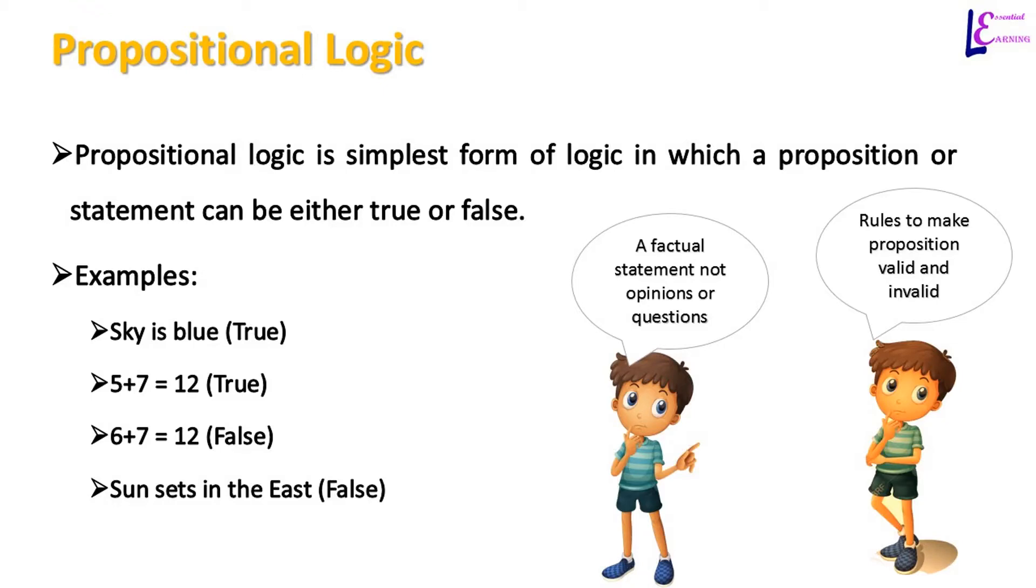Examples of propositions can be sky is blue, 5 plus 7 is equal to 12. Both of these propositions are true. First one is based on fact and second one is mathematically correct. A statement 6 plus 7 is equal to 12 and sun sets in the east are false because first one is mathematically incorrect and second is factually wrong.